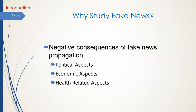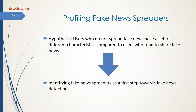Also, as the most recent example, the misinformation propagated related to the COVID-19 pandemic has caused various challenges and dangers to the public. In this task, the goal is to determine whether fake news spreaders have a set of different characteristics compared to others and, if possible, use these characteristics to identify the fake news spreaders. This task can be used as a first step towards fake news detection and preventing fake news from being propagated among social media.